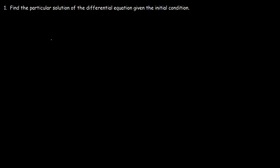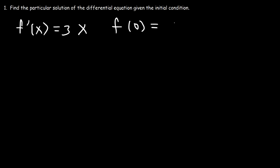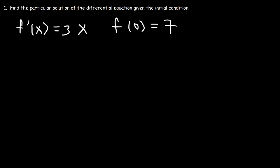Let's say we have the differential equation f'(x) is equal to 3x, and we're also given the initial condition that f(0) is equal to 7. With this information, find a particular solution to this differential equation. So how can we solve that? Well, let's begin by finding the antiderivative of both sides of that equation.